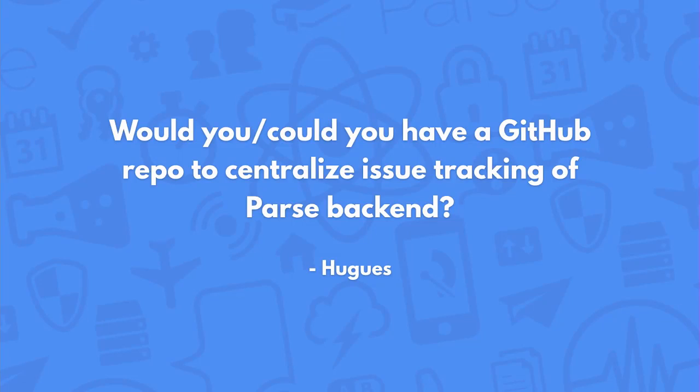Would you, or could you, have a GitHub repo to centralize issue tracking of the Parse backend? This is a great idea. However, we're not going to be using GitHub issues to track backend issues. The best way to get help is to go to parse.com/help and submit an issue there. This allows us to track the application that the issue may have started from and also get some contact information about who you are and a little bit more context around your problem.